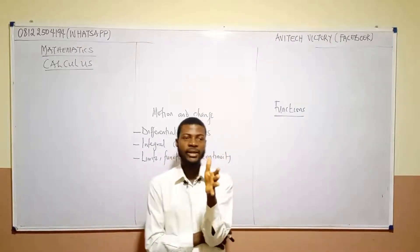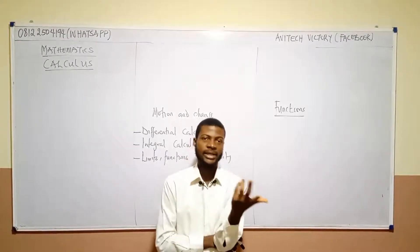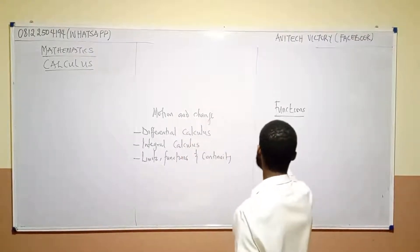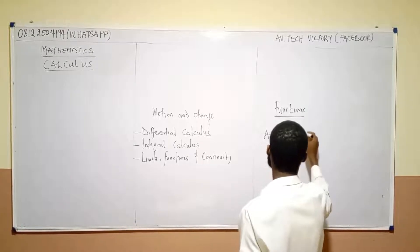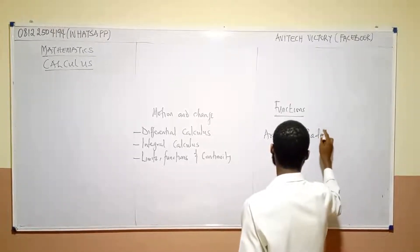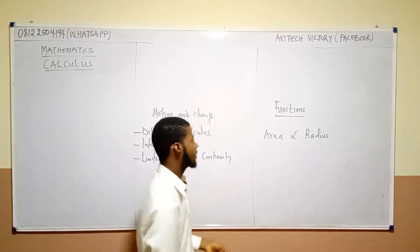in life, things depend on each other. Things depend on each other. So, two things basically depend. It's possible. The area of a circle is dependent on its radius. Yeah, that's true. The area of a circle is dependent on the radius.